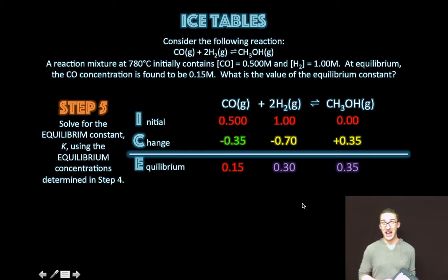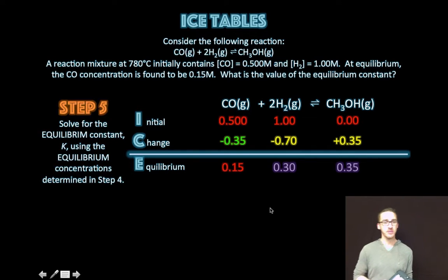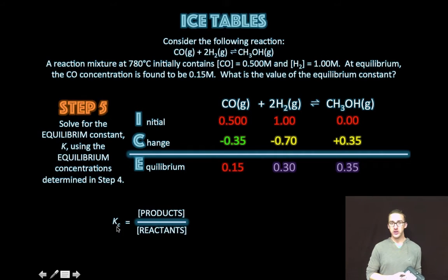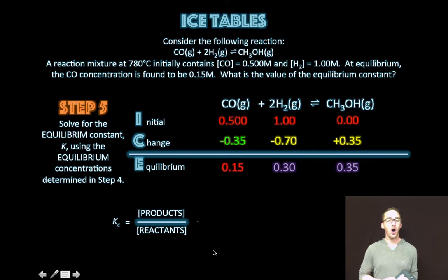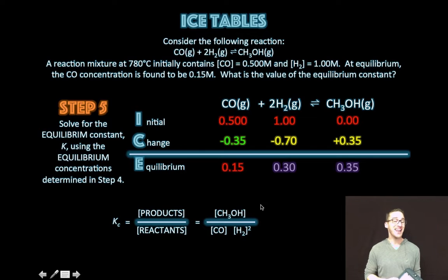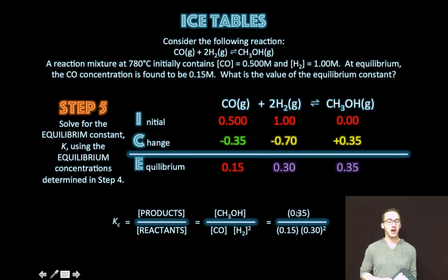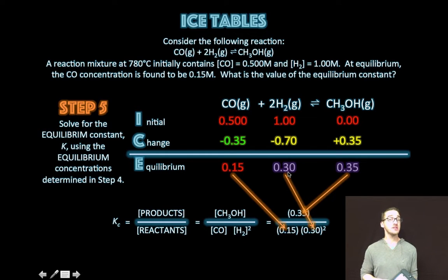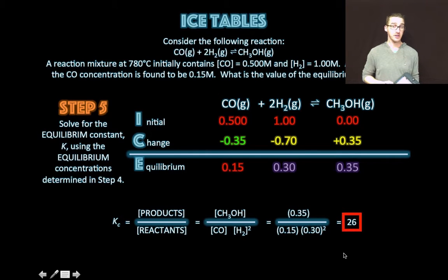Carefully examine the stoichiometry to understand why those changes are written as they are. Step four: sum each column to determine the equilibrium concentrations. 1 minus 0.7 equals 0.3. Zero plus 0.35 equals 0.35. Step five: solve for the equilibrium constant using the equilibrium concentrations. Don't forget your equilibrium constant expression is products over reactants. Always write this out. Plug in our equilibrium concentration values, then use your calculator to solve.